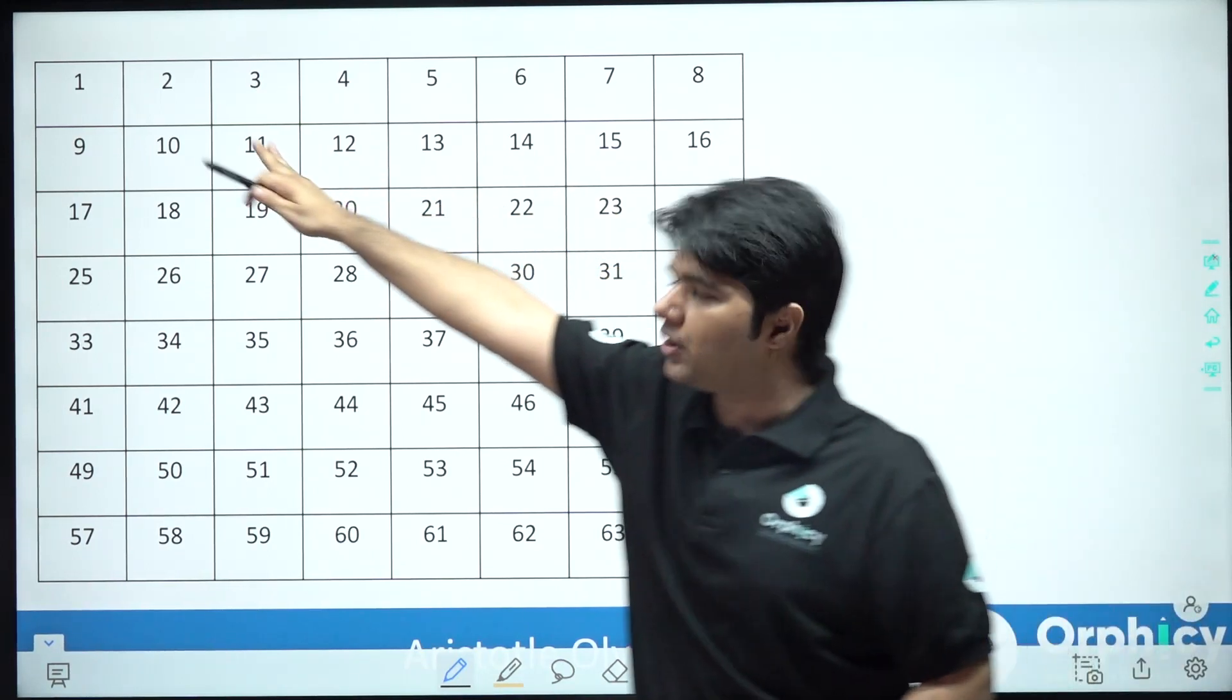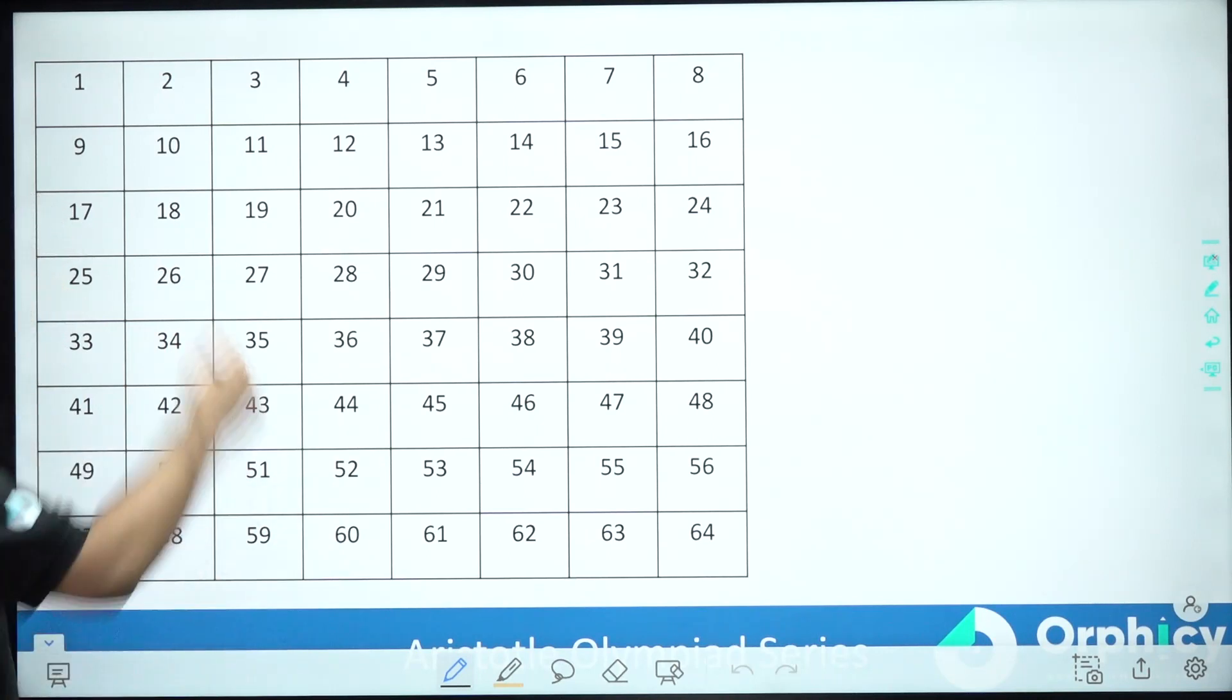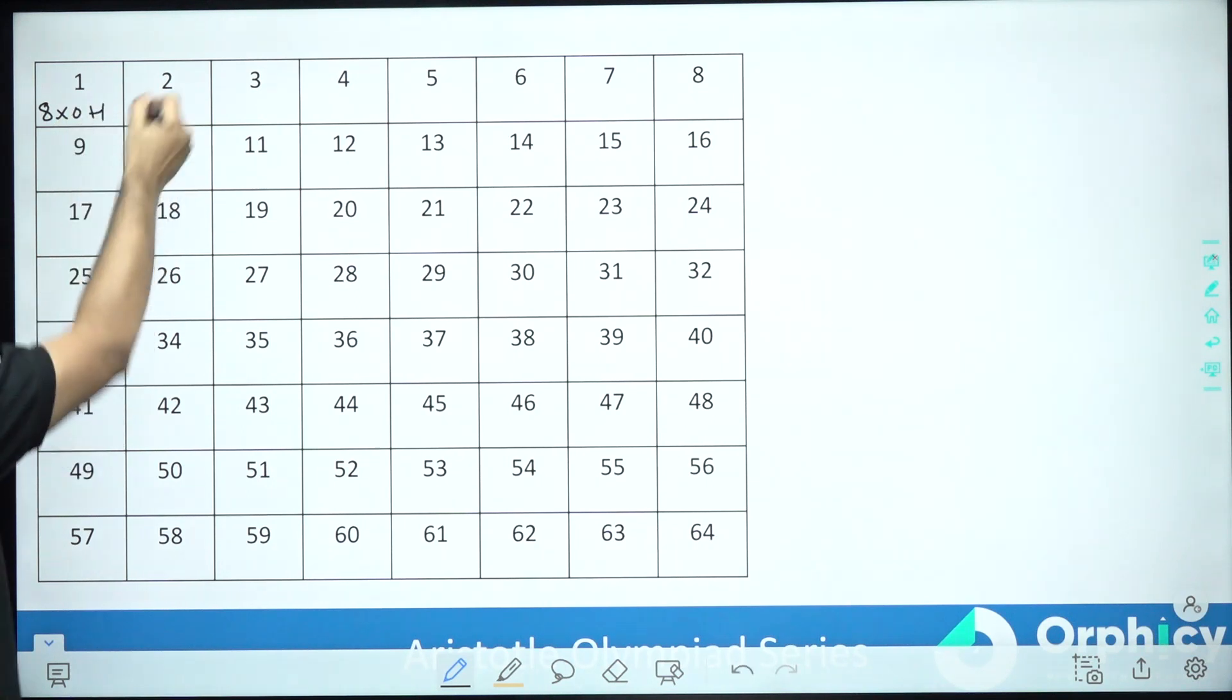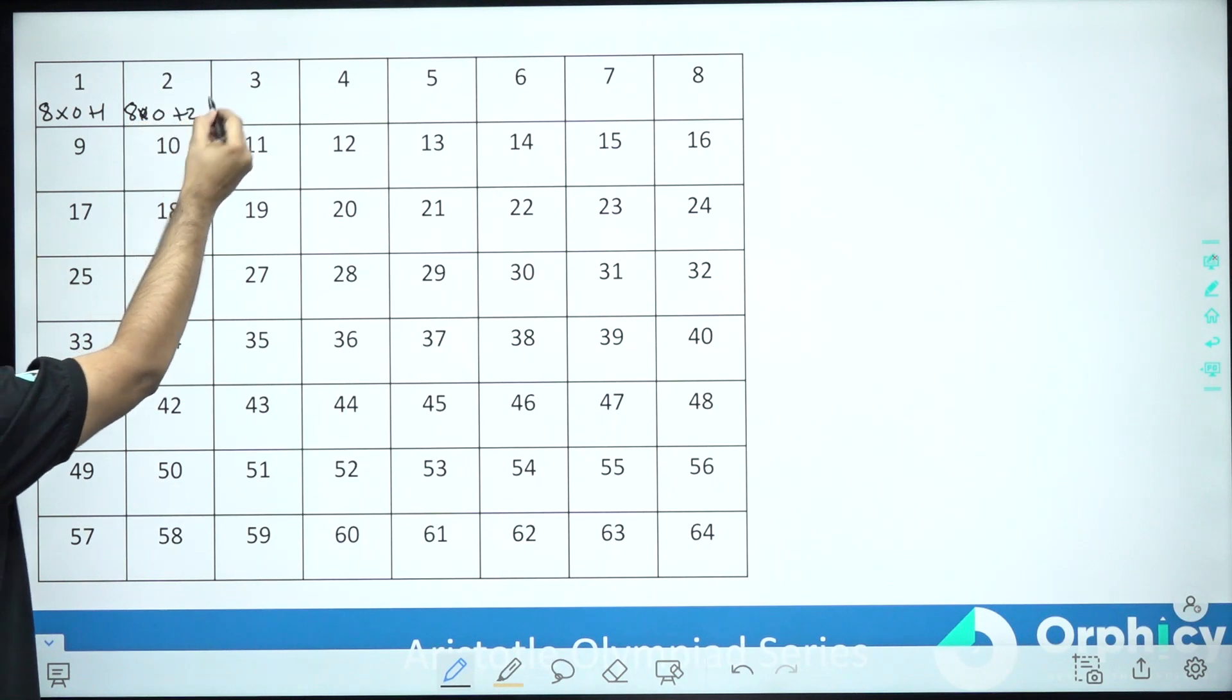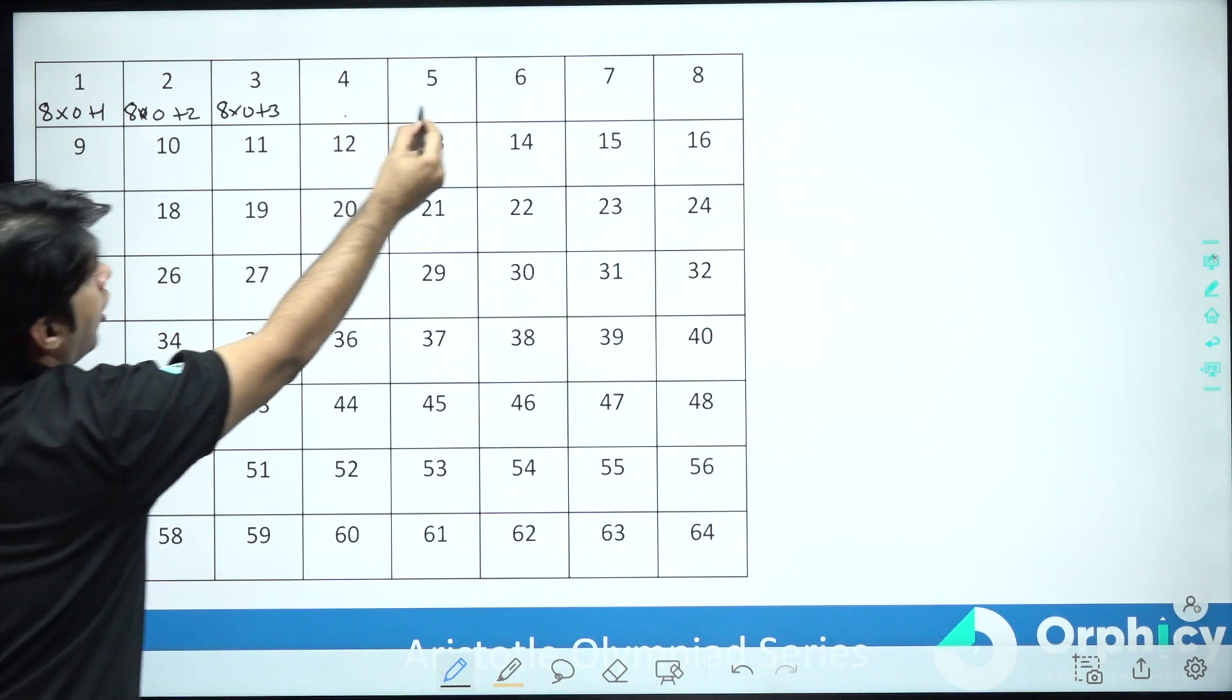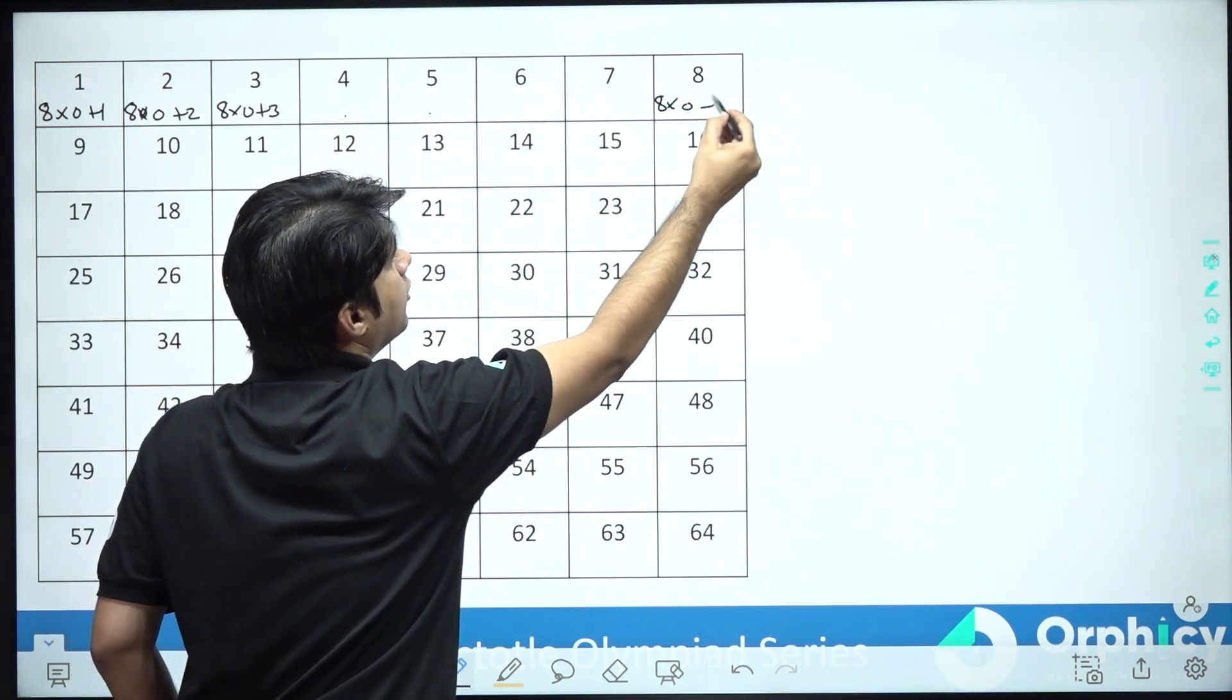What can I do? I can express these numbers as: 1 I can write as 8 x 0 plus 1, similarly 2 I can write as 8 x 0 plus 2, 3 I can write as 8 x 0 plus 3 and so on till the last number I can write as 8 x 0 plus 8.